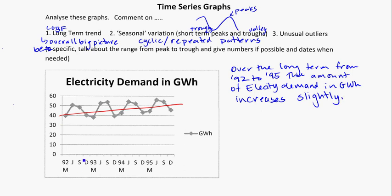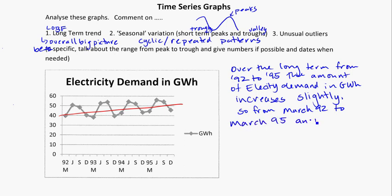Let's try to be specific. The value for March in 92 is roughly 40 gigawatt hours, and the value in March in 95 is roughly 45. So from March 92 to March 95, there's an increase of roughly 5 gigawatt hours.